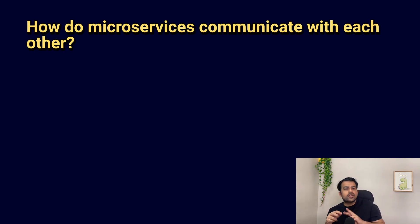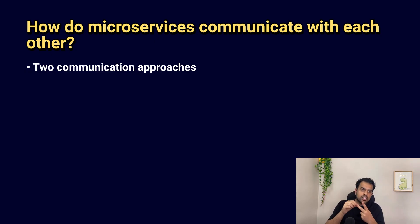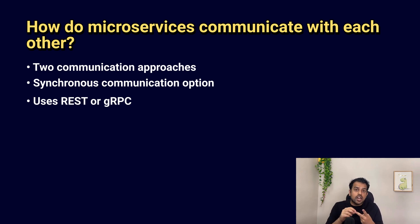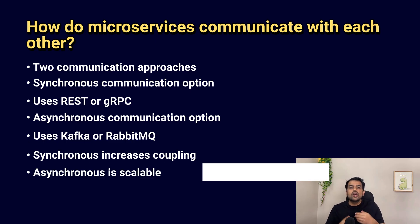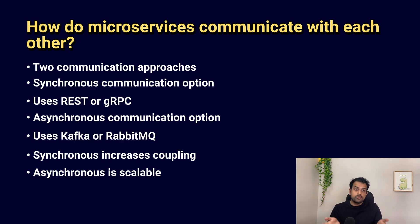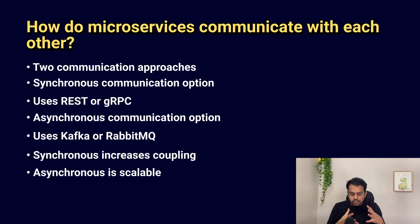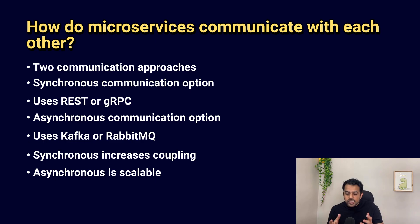Since microservices was on the resume, the next question is also from microservices: how do microservices communicate with each other? There are two ways — synchronous and asynchronous. Synchronous uses REST APIs or gRPC, while asynchronous uses message queues like Kafka or RabbitMQ. Synchronous is immediate but increases tight coupling. Asynchronous is more scalable and fault-tolerant — with Kafka or RabbitMQ you consume messages from a queue without pressure to produce a result at the same moment.